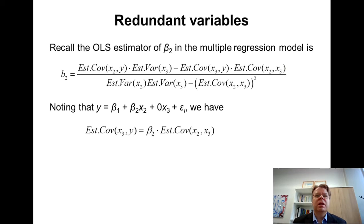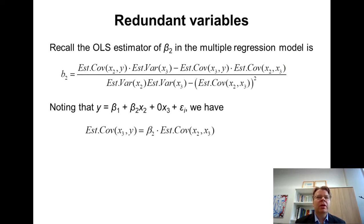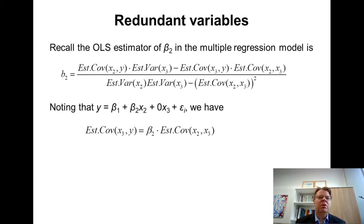The reason I want to keep this discussion to simple cases of single regression and multiple regression with two variables is because in the multiple regression case, the closed-form solution to the OLS estimator gets much more complicated, but it is still manageable with two explanatory variables. Here is the formula for the OLS estimate when we have two explanatory variables x2 and x3.